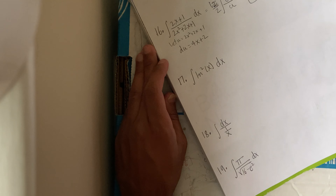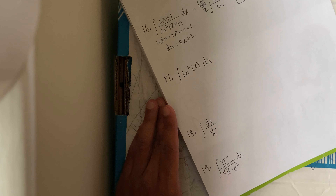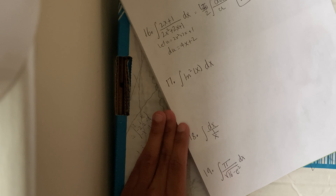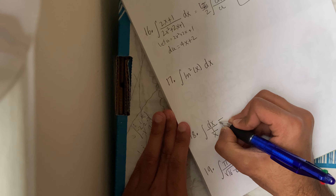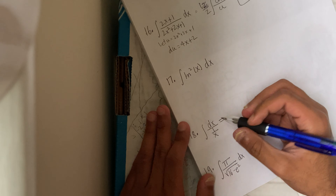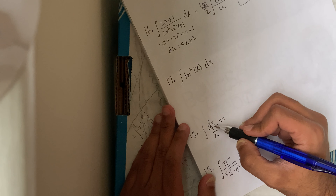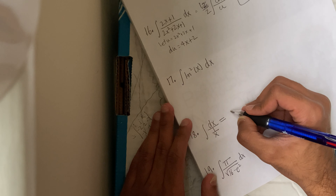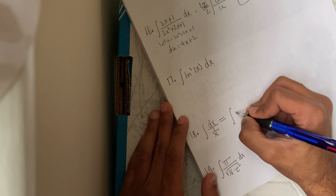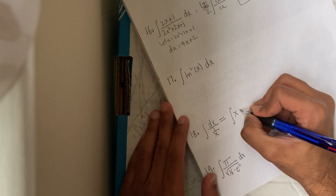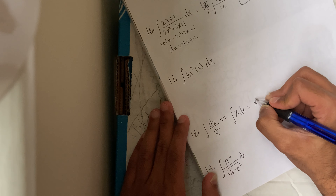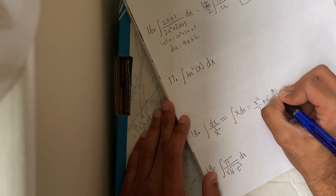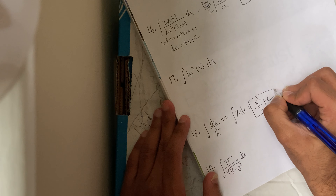We'll come back to 17. For number 18: the integral of dx over (1/x). The 1/x in the denominator can be redefined as x dx, which is just x squared over 2 plus c. Trolly enough.